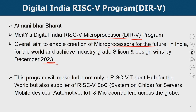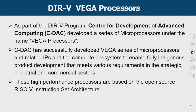This program will make India not only a RISC-V talent hub for the world, but also a supplier of RISC-V SoCs for servers, mobile devices, automotive, IoT, and microcontrollers across the globe. As part of this initiative, CDAC developed a series of microprocessors under the name Vega processors, successfully developing the Vega series of microprocessors and related IPs. The complete ecosystem was also developed to enable fully indigenous product development meeting requirements in strategic, industrial, and commercial sectors. These high-performance processors are based upon the open-source RISC-V instruction set architecture.